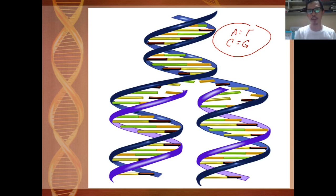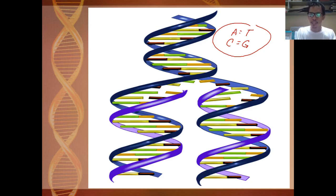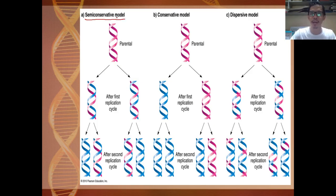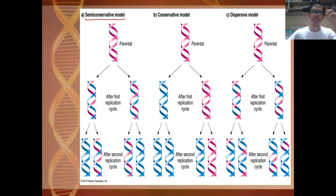After the discovery of DNA, scientists were baffled on how it replicates and debated several models to explain the process. Upon their research, they found several models: there is what they call the semi-conservative model, the conservative model, and the dispersive model. Let's start first with the semi-conservative model.